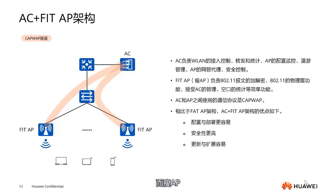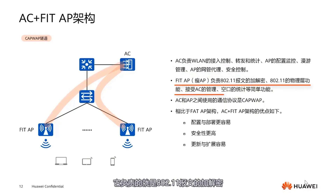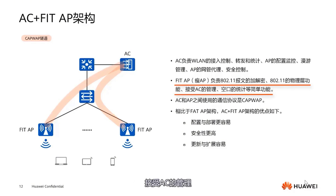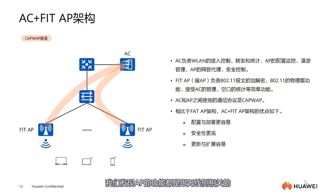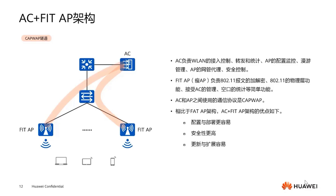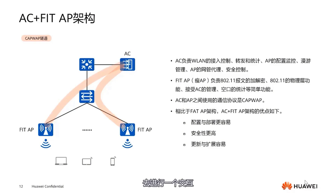While thin APs handle 802.11 message encryption and decryption, 802.11 physical layer functions, accept management from the AC, and simple functions like air interface statistics. We find that AP functionalities are all related to the wireless side and are associated with 802.11. At the same time, AC and AP interact via the CAPWAP tunnel.